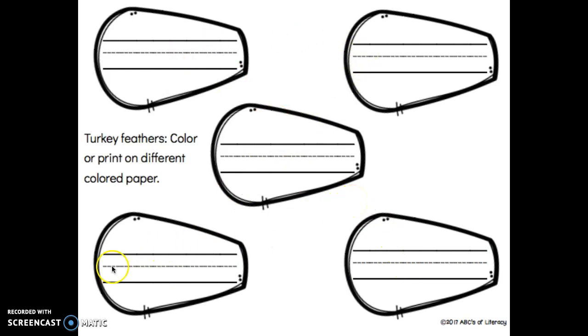You might want to write with a pencil first and then trace it with a black marker so it shows up nice and bright. Because step number three is to color the feathers different colors. You might pick colors like red or blue or purple.